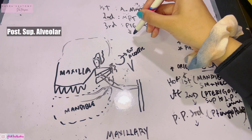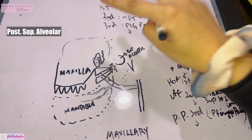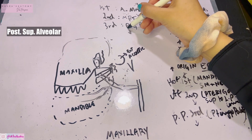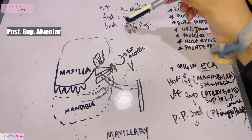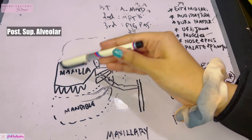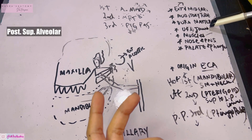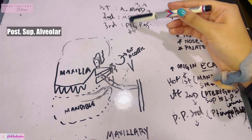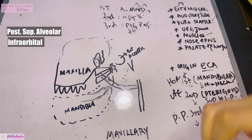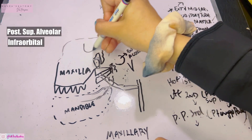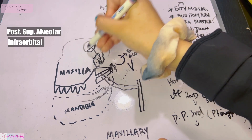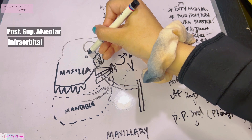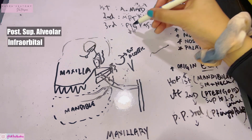The third part — PIG PASS: P is for the posterior superior alveolar artery. Two branches emerge before the artery enters the pterygomaxillary fissure: the posterior superior alveolar artery and the infraorbital artery. The posterior superior alveolar artery supplies the upper jaw, upper teeth, and mainly the maxillary sinus. The infraorbital artery has a long course — it enters through the inferior orbital fissure and runs through the infraorbital canal, emerging on the face through the infraorbital foramen.